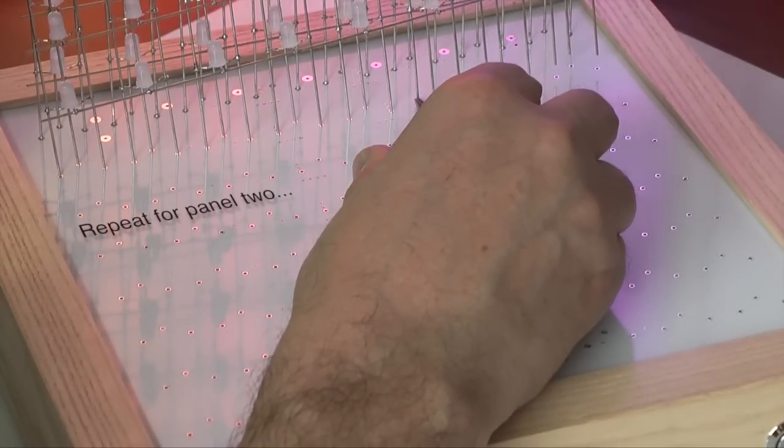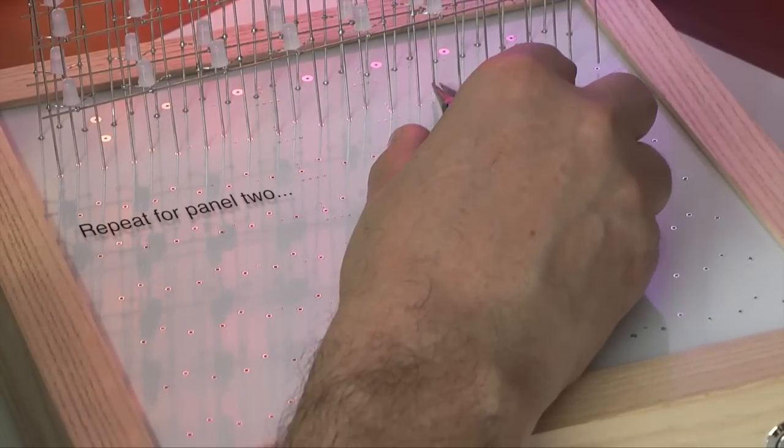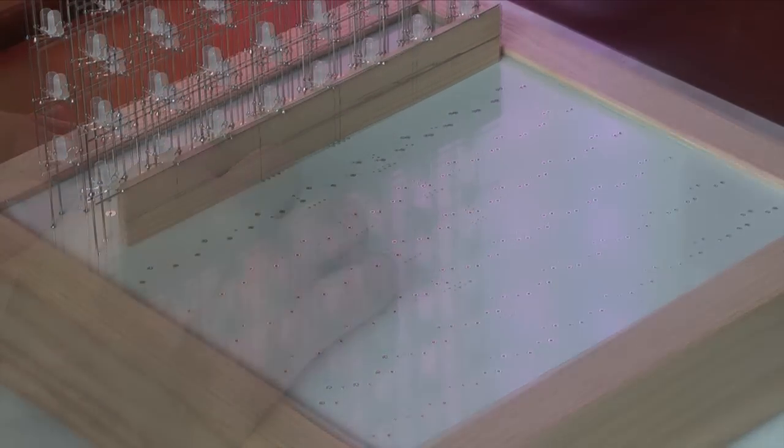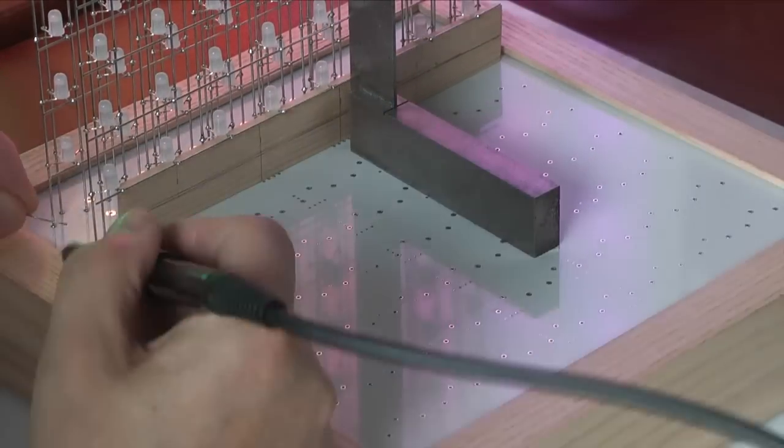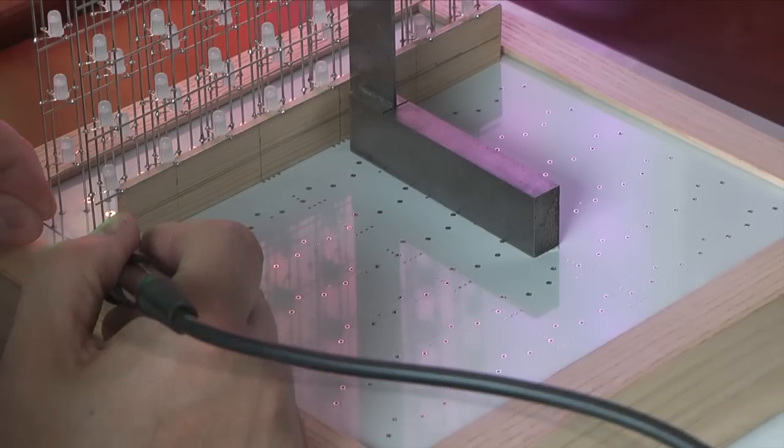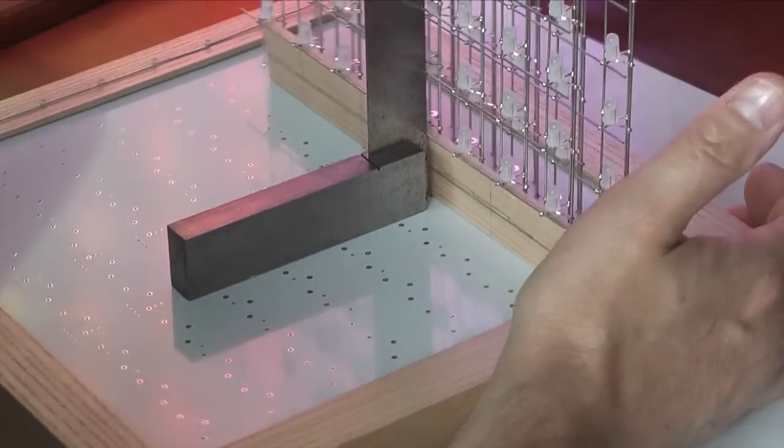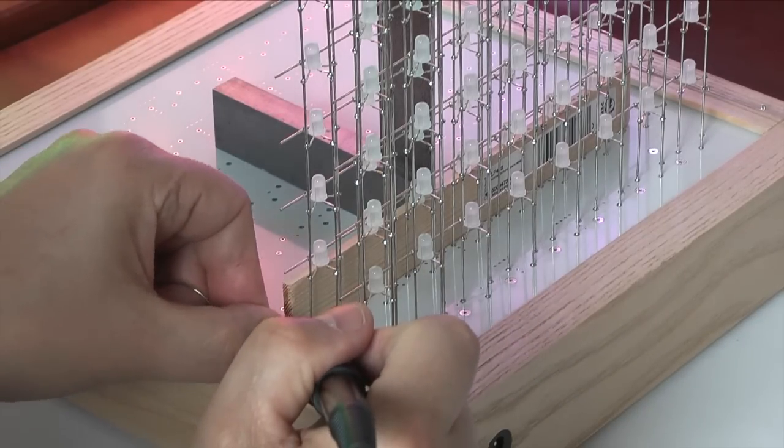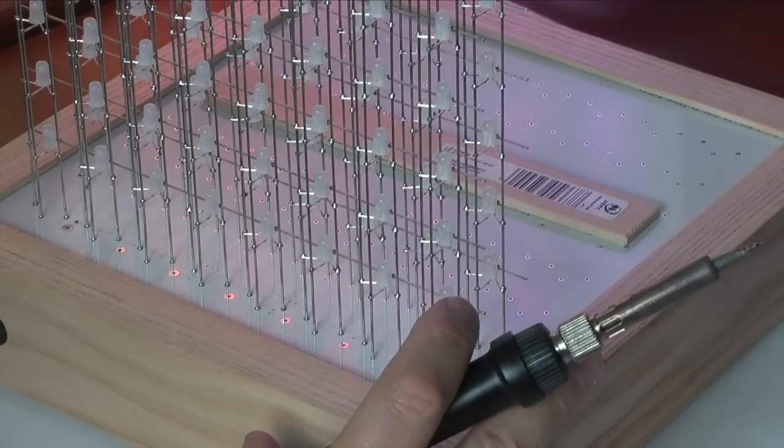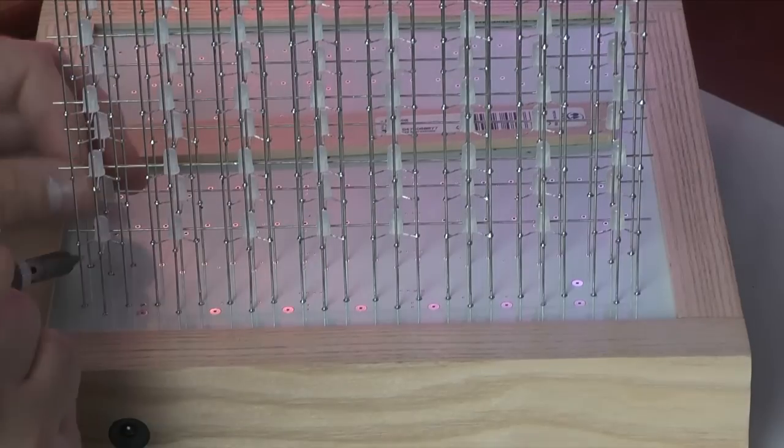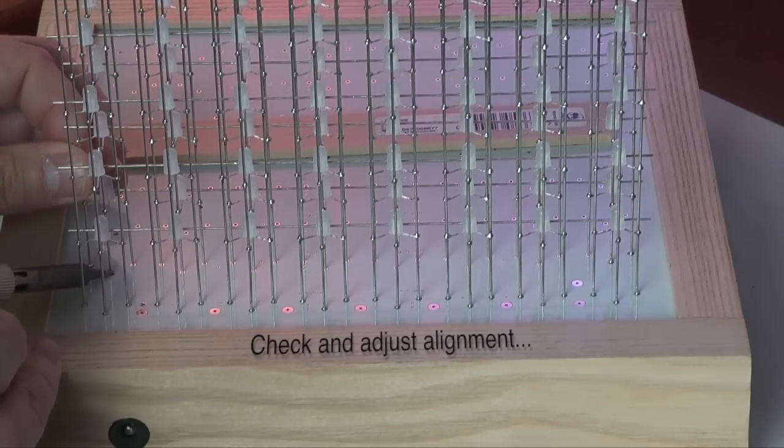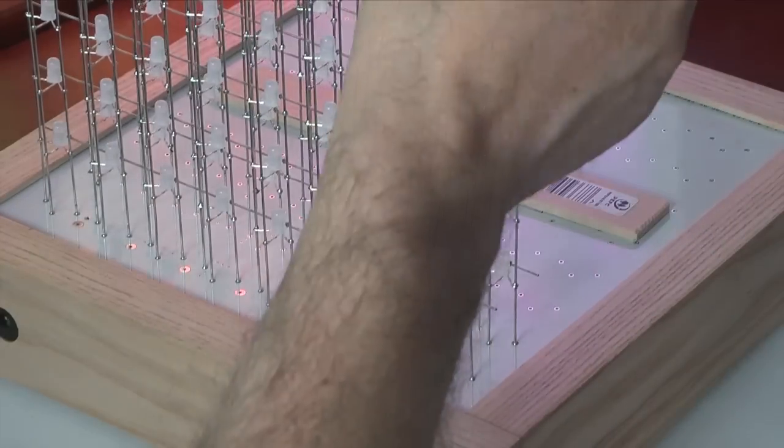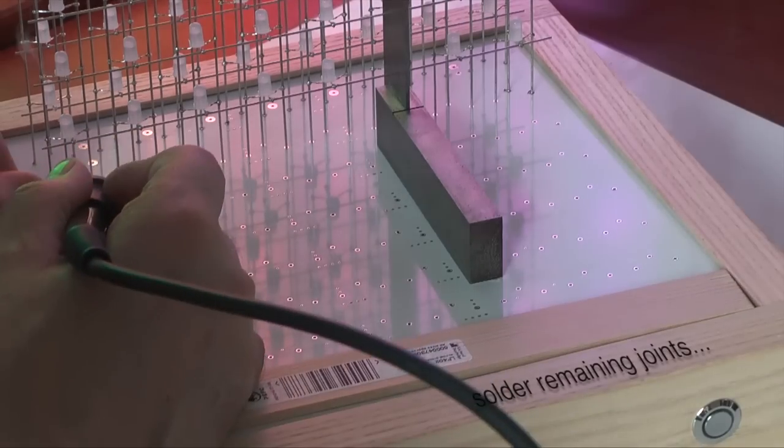The exact process is repeated for the second panel. Insert the wooden spacer, check the panel is perpendicular, solder two of the outer cathodes, fine tune the alignment to the first panel, and solder the remaining joints.